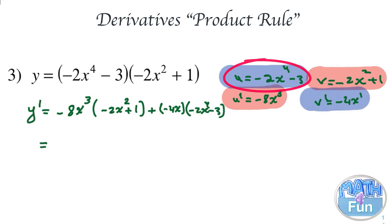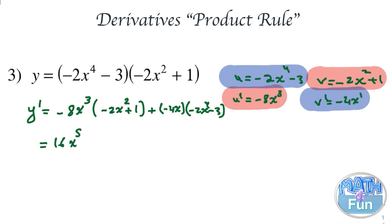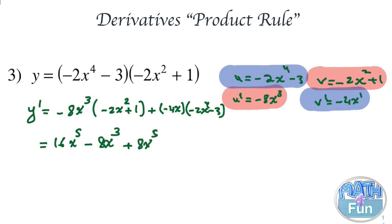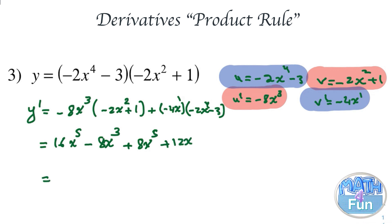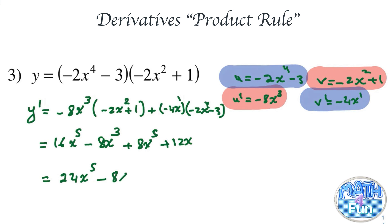Simplifying: minus 8 times minus 2 gives 16, and x cubed times x squared gives x to the power 5, so 16x to the power 5. Minus 8x cubed times 1 gives minus 8x cubed. For the second part: minus 4x times minus 2x to the power 4 gives plus 8x to the power 5 (adding powers 1 and 4). And minus 4x times minus 3 gives plus 12x. Combining like terms: 16x⁵ plus 8x⁵ gives 24x to the power 5, minus 8x cubed, plus 12x.